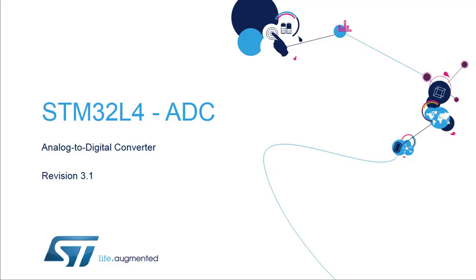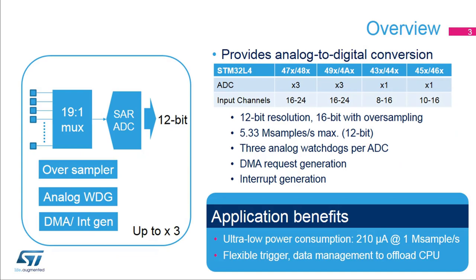Welcome to this presentation of the STM32L4 Analog to Digital Converter block. It will cover the main features of this block, which is used to convert external analog voltage-like sensor outputs to digital values for further processing in the digital domain. The analog to digital converters inside STM32 products allow the microcontroller to accept an analog value like a sensor output and convert the signal into the digital domain.